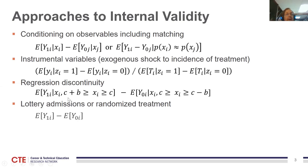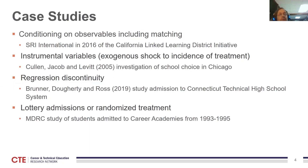Finally, with lottery admissions or randomized treatment, it's very clean — we just measure the average outcome for the treatment group, the average for the control group, and take the difference. To think about counterfactuals in these contexts, we'll look at four different case studies.